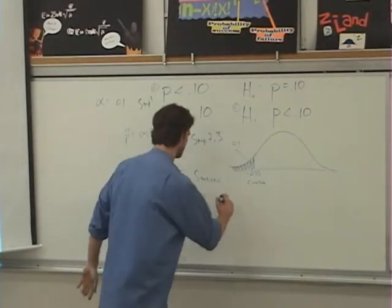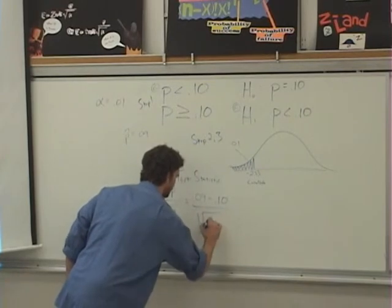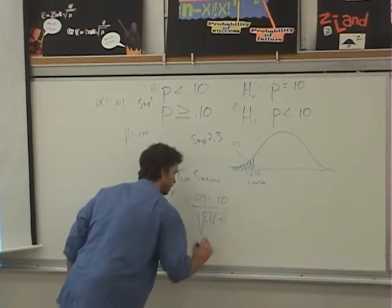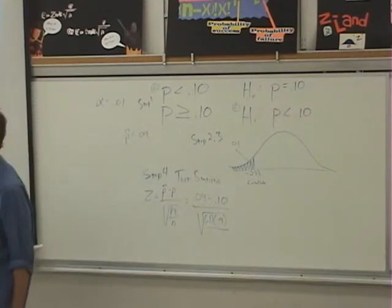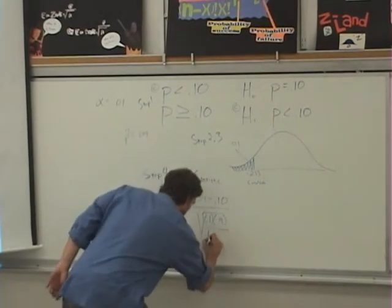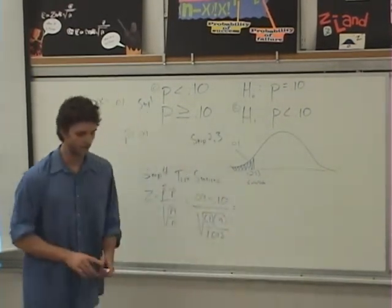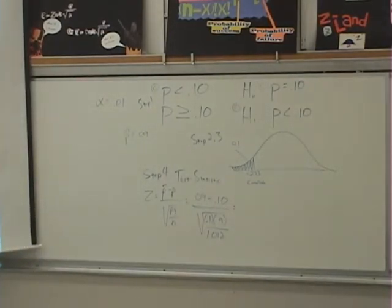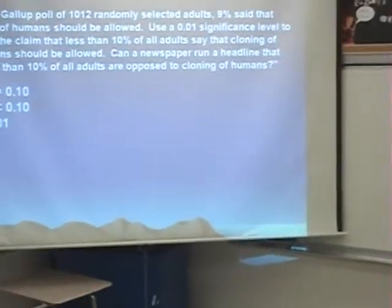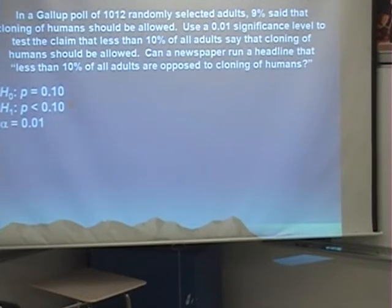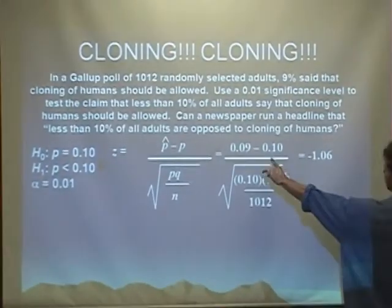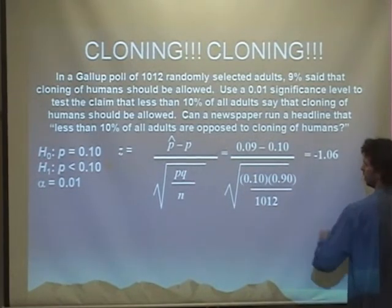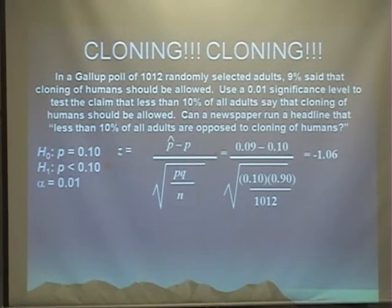So that's 0.09 minus what do we think P is? P is assumed to be 0.1. So that's going to be 0.10 divided by the square root of PQ, which is 0.1 times 0.9, PQ, 0.1, 0.9 divided by N, which was 1,012 randomly selected people. So that's 1,012. We have all that data. And now that we have it, we are able to find out. I challenge you to do that with your calculator. 0.09 minus 0.10 divided by the square root of 0.1 times 0.9 divided by 1,012 gives us a Z value of negative 1.06. So this here becomes negative 1.06.